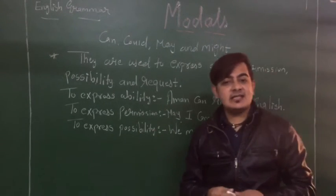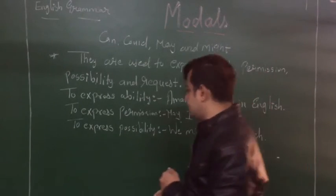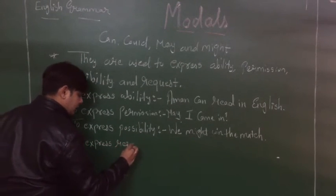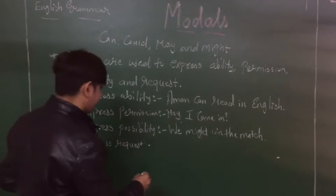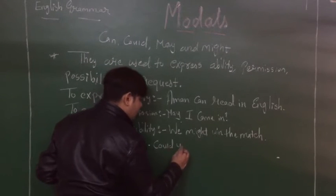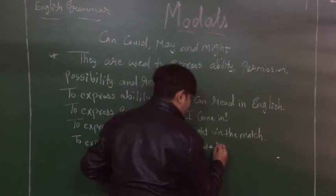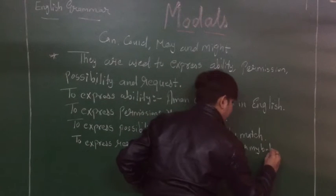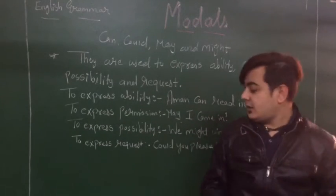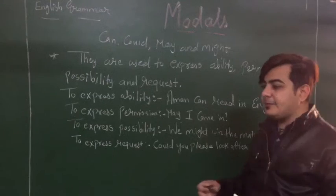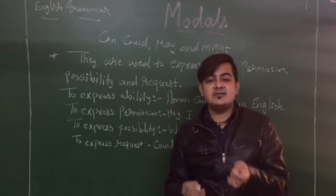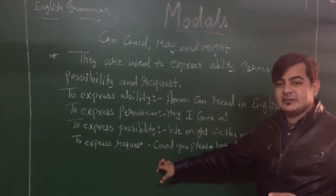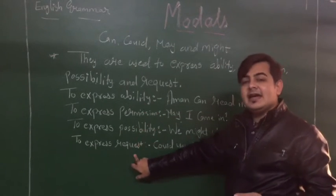Next, we have request. To express a request, we can say: 'Could you please look after my baby?' This is a request made to someone else. So these are the four things I have explained — ability, permission, possibility, and request — all expressed using can, could, may, and might.